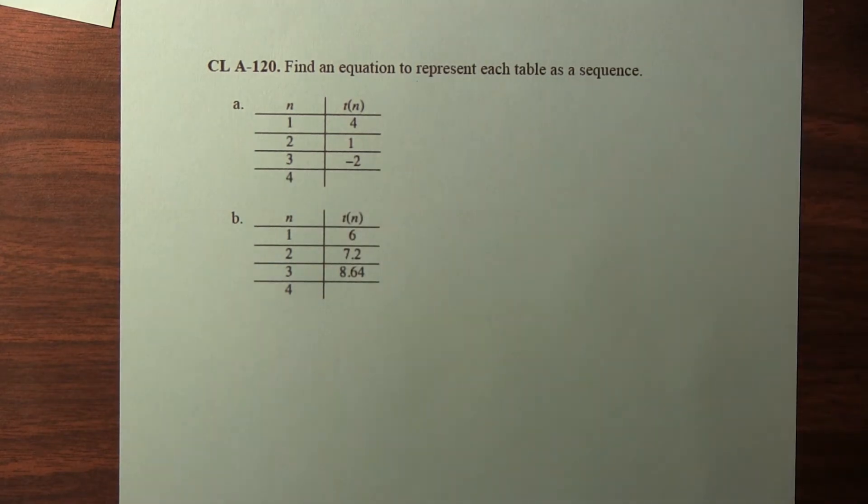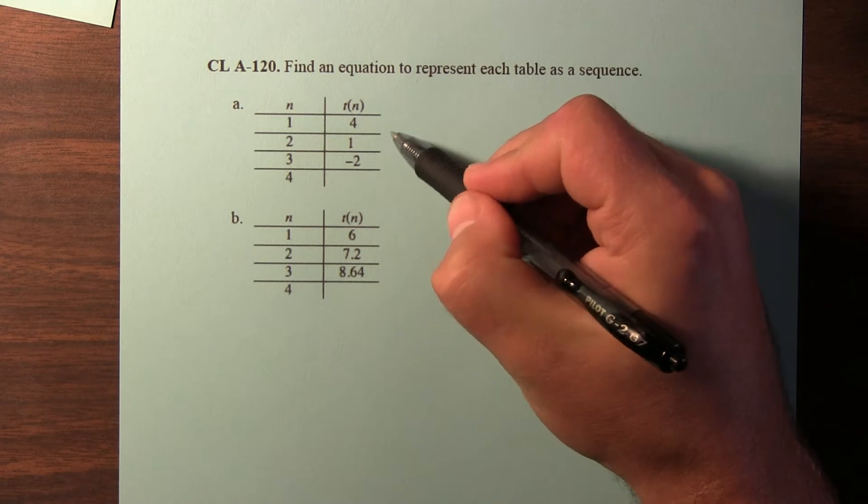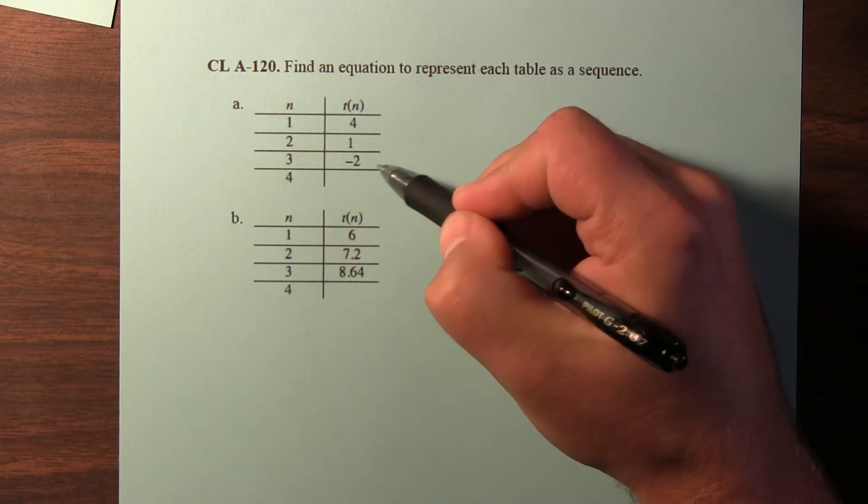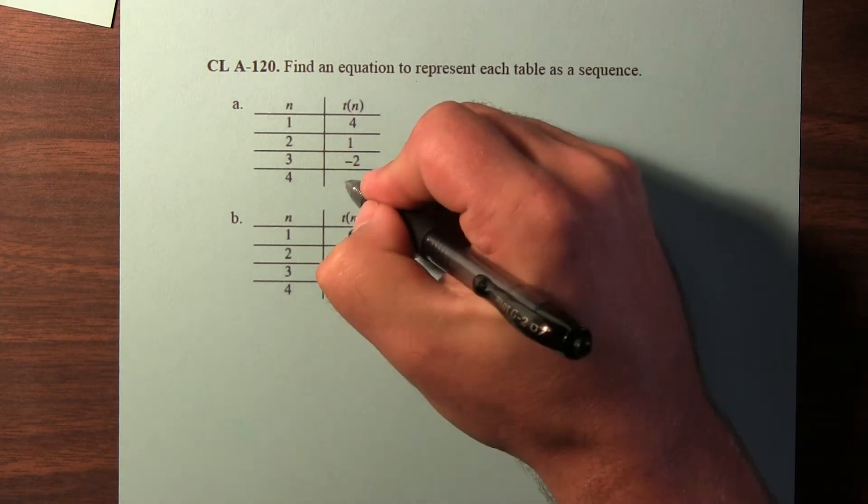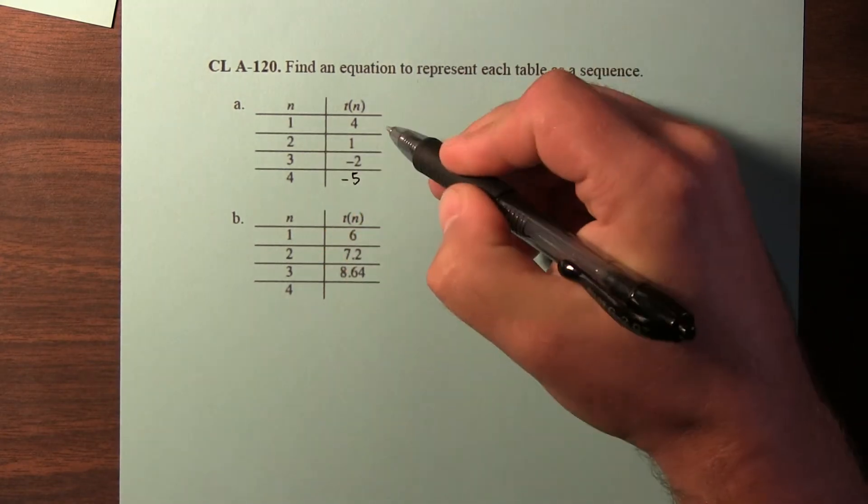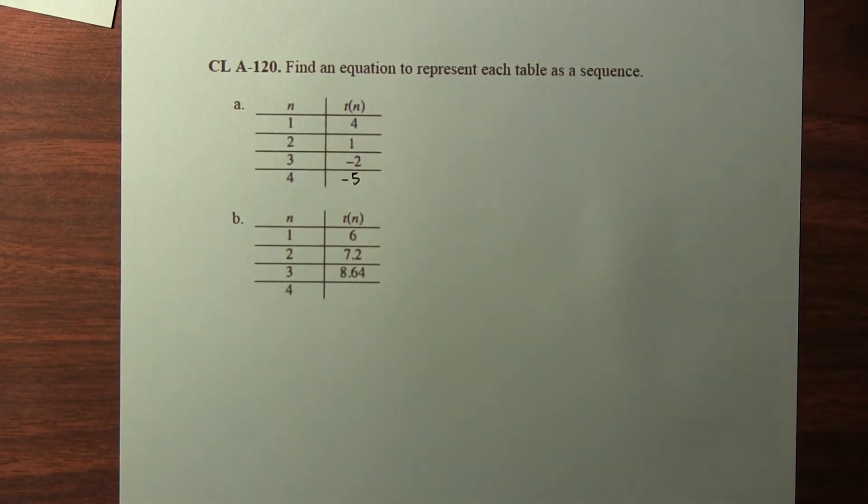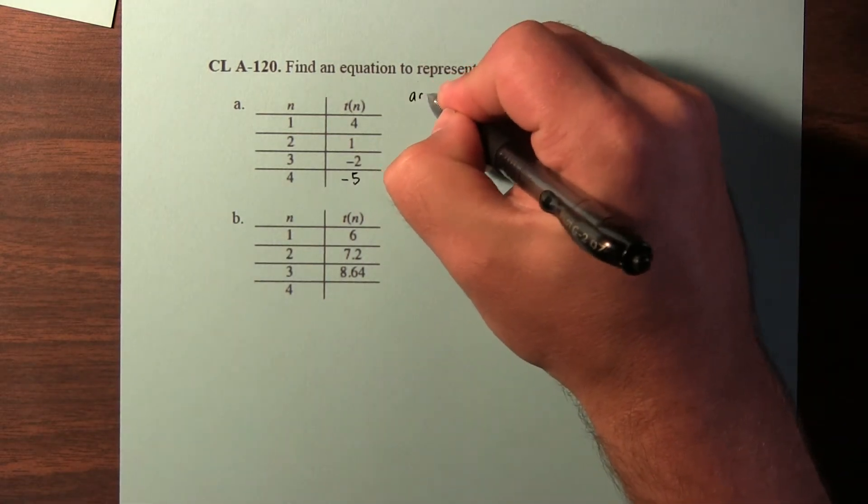Let's look at the first table. I notice that 4 minus 3 is 1, and 1 minus 3 is negative 2, and negative 2 minus 3 would be negative 5. Each time, we're decreasing by 3. So this is an arithmetic sequence.